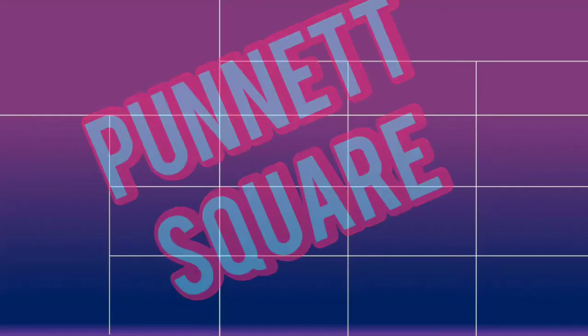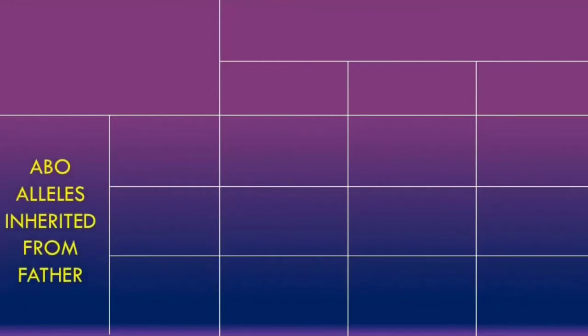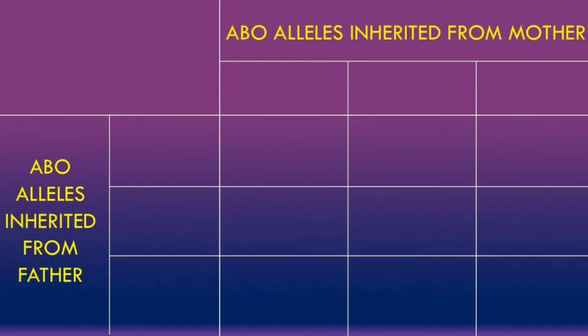We're going to draw a Punnett square showing how the ABO blood group genotype is inherited. Remember, the genotype of the ABO blood group is determined by the ABO alleles inherited from the father and the ABO alleles inherited from the mother. There can be A, B, or O alleles being inherited from the father by the offspring, and similarly there can be A, B, or O alleles being inherited from the mother.